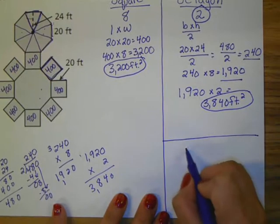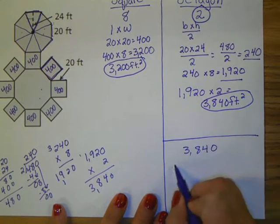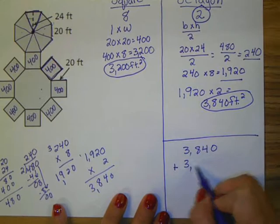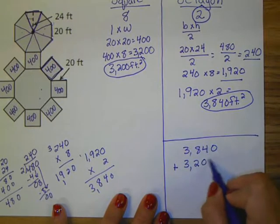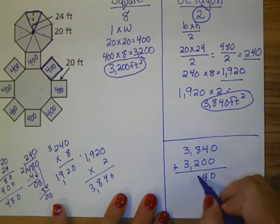So somewhere on my paper I want to show that. 3840 plus 3200, add those up.